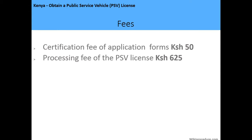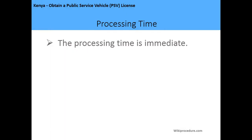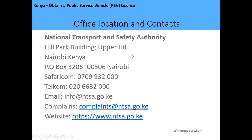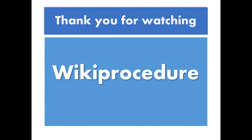The fees applicable are: 50 shillings for certification of Form 16 or Form 17, and a processing fee of 625 Kenya shillings for the PSV license. The validity period is two years from the date of issue. The processing time is immediate — you'll receive the license as soon as you finish your application. The NTSA office is located at Hill Park Building, Upper Hill, Nairobi, Kenya, and can be visited at www.ntsa.go.ke. Note that applicants applying in person must lodge their applications at the Road Transport offices at Times Tower, Nairobi, and should ensure they have a valid Certificate of Good Conduct before beginning.